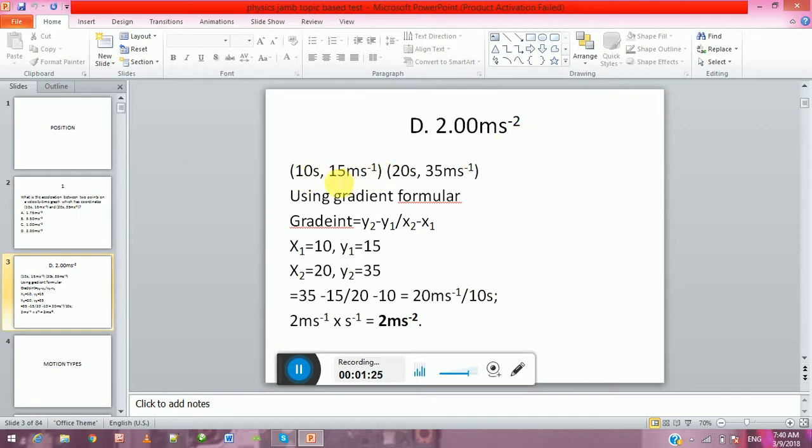Remember, the coordinates are giving us 10 seconds and 15 meter per second, then 20 seconds and 35 meter per second. So using gradient formula, we know that gradient equals y₂ minus y₁ all over x₂ minus x₁. And here x₁ is the time